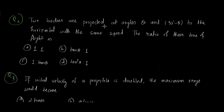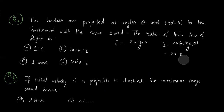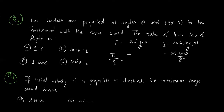Question 2: Two bodies are projected at angles θ and 90°−θ to the horizontal with the same speed. Find the ratio of their times of flight. T1 = 2u·sinθ / g and T2 = 2u·sin(90°−θ) / g = 2u·cosθ / g. Dividing: T1/T2 = sinθ / cosθ = tanθ. So the ratio is tanθ : 1, and the correct answer is option B.